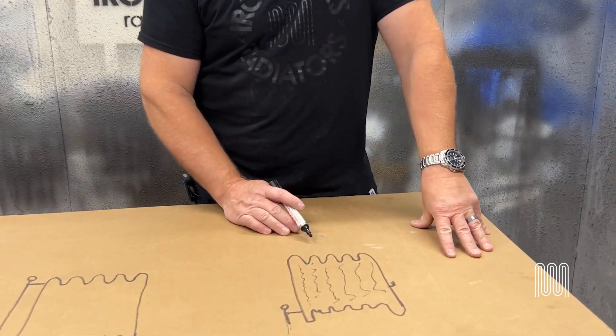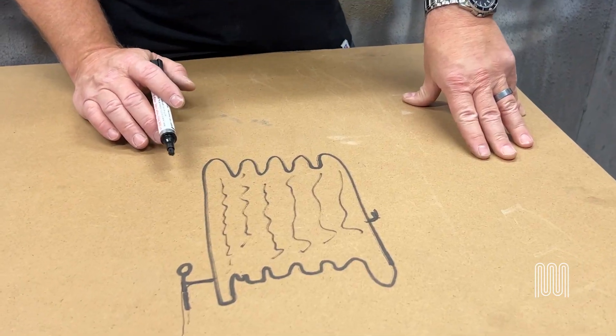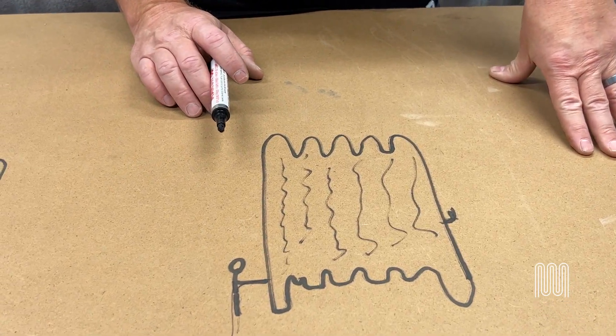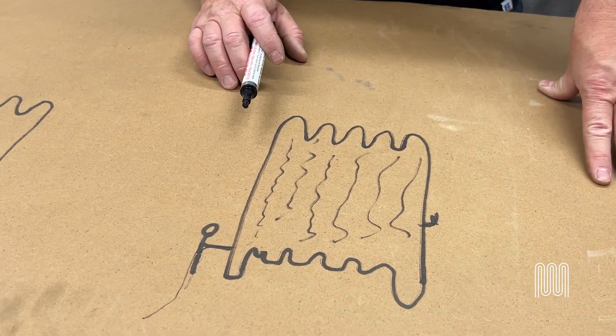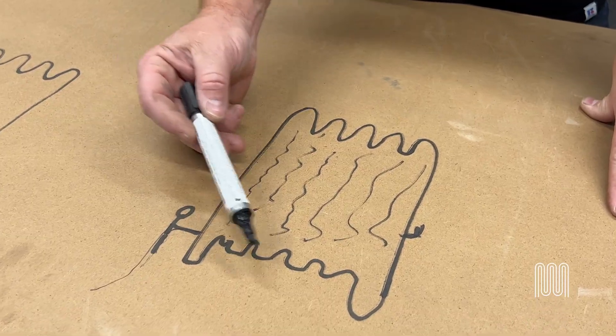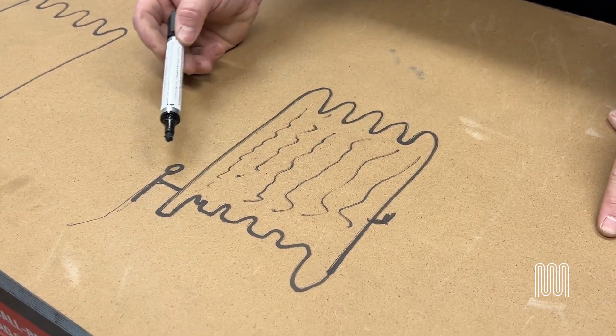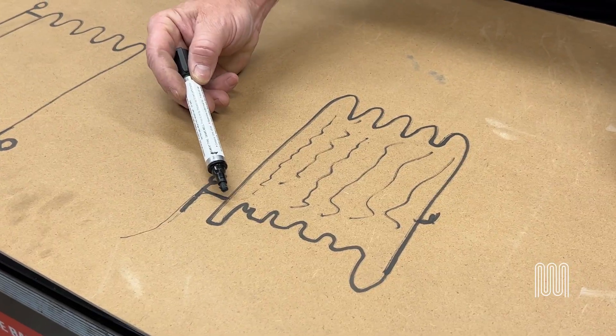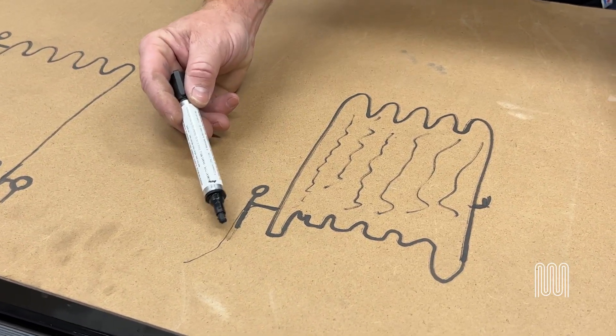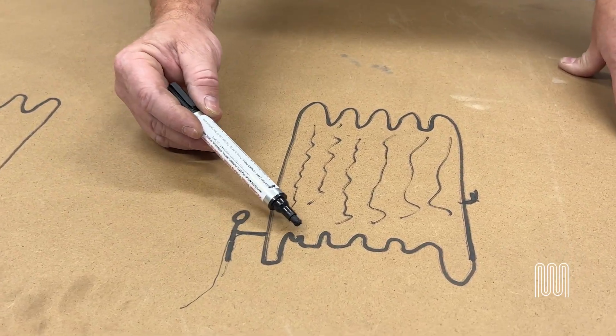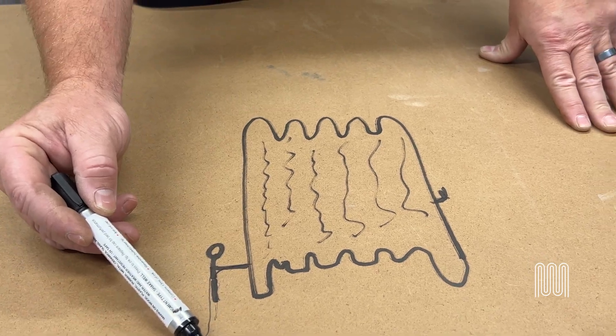We'll start with single pipe steam. Single pipe steam is significantly older than two pipe steam. It required a lot less technology for it to operate. As you can see by my lovely illustration here, we have a cast iron radiator that has a single pipe coming to the radiator. That pipe will carry the steam into the rad and allow the condensate to go back out of the rad.